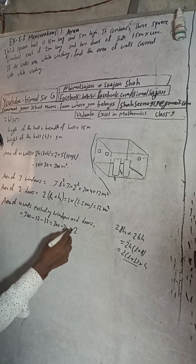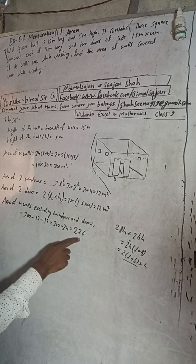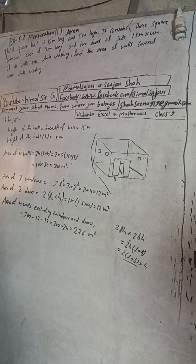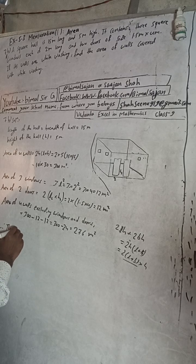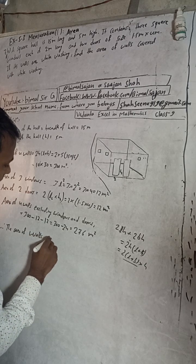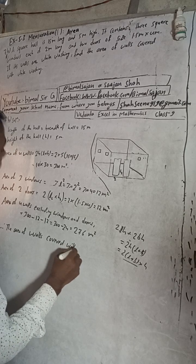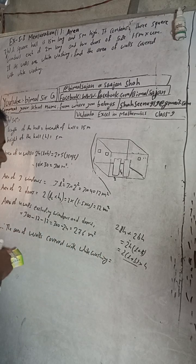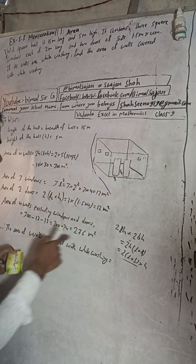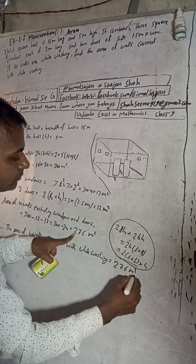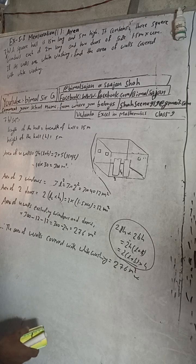So 300 minus 24 equals 276 square meters. Therefore, the area of walls covered with whitewashing is 276 square meters. The answer in the book is also 276, so this is correct.